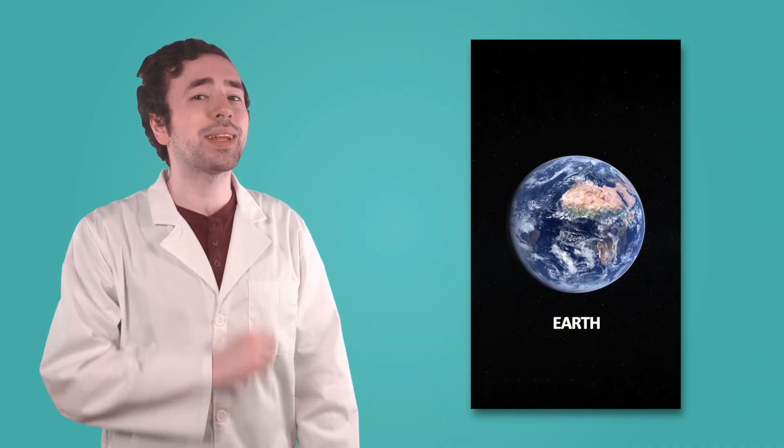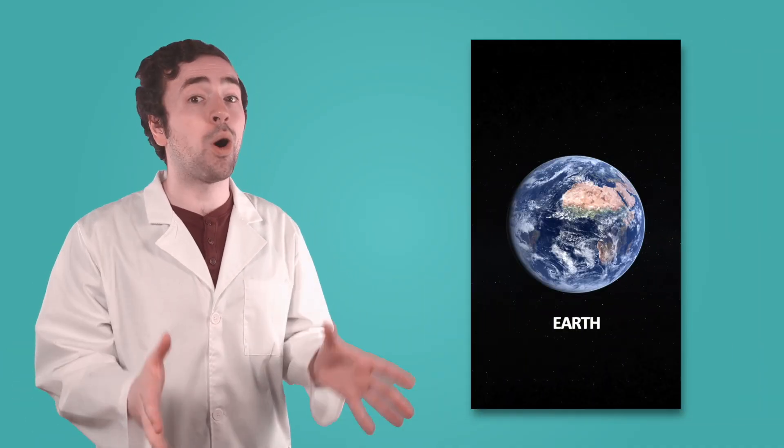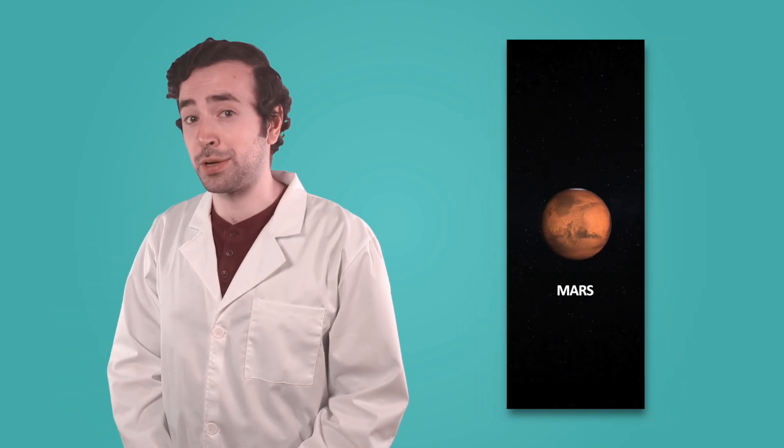In fact, from space, our planet appears blue because of all the water on its surface. But our next planet in line looks very different.